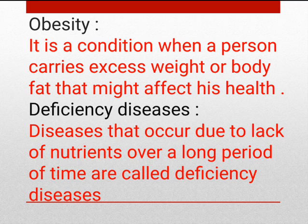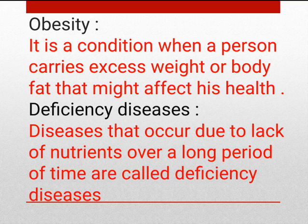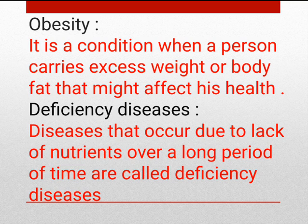Next, coming to deficiency diseases. Diseases that occur due to lack of nutrients over a long period of time are called deficiency diseases. This does not happen in one or two days — it is a condition that develops over a long period of continuous poor diet, where the body becomes deficient in vitamins, minerals, proteins, and carbohydrates.